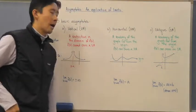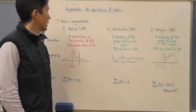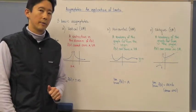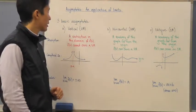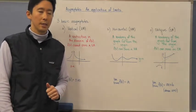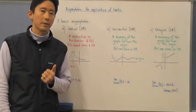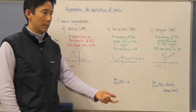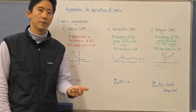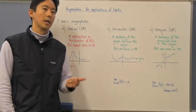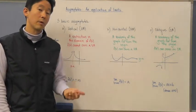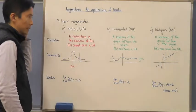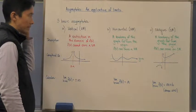Let's take a look at an application of limits: asymptotes. We're looking at this particular application because at this point you know how to evaluate limits algebraically, and we've made the connection between evaluating limits algebraically and its relationship to the graph of f of x. Let's go ahead and take a look at the three basic types of asymptotes.